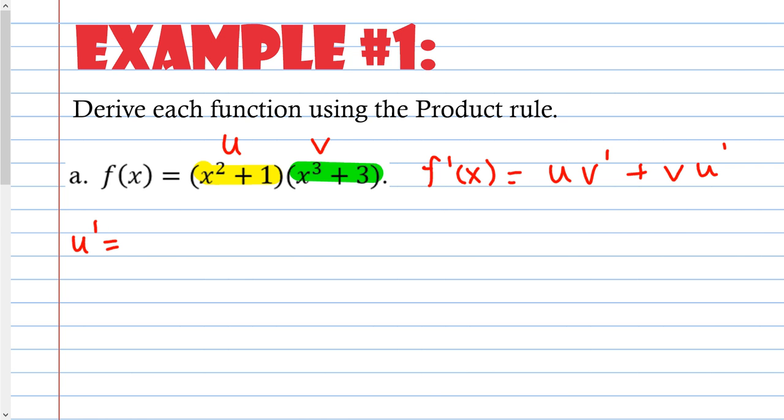So what's the derivative of x squared plus 1? So it's 2x. And now, what's the derivative of v? So what is v prime? So looking at v, the derivative of that is 3x squared plus 0. So there are my u, my v, my u prime, and my v prime. So now really, all I have to do is take all of these numbers and put them together. So f prime of x equals u. U is x squared plus 1 times v prime, which was 3x squared, plus v, which was x cubed plus 3, times u prime, which was just 2x.